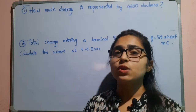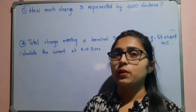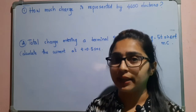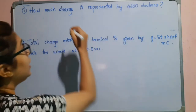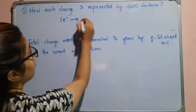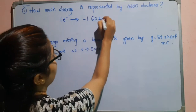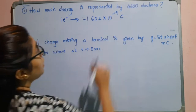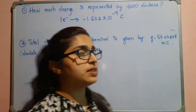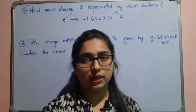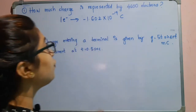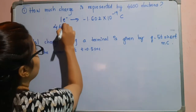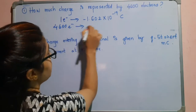You know the charge of one electron is minus 1.602 × 10⁻¹⁹ coulomb. So one electron has a charge of minus 1.602 × 10⁻¹⁹ coulomb. Then what is the charge represented by 4600 electrons? For one electron if this is the charge, then for 4600 electrons what is the charge?